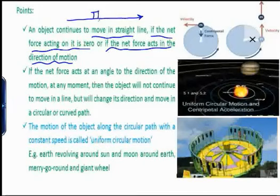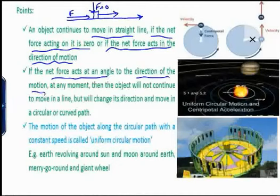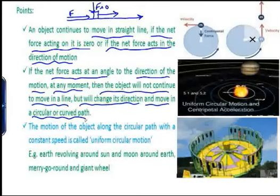For example, an object will continue to move in a straight direction if the force acting on it is zero or if the force is in the same direction. If the net force acts at an angle to the direction of motion, then the object will not continue to move in a straight line but will change its direction and move in a circular or curved path.